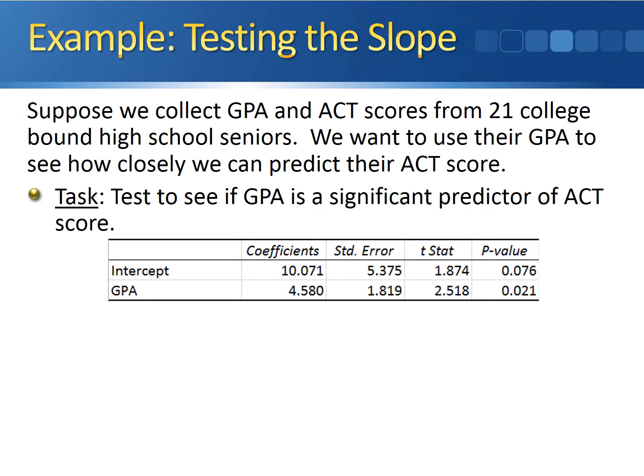What you should notice first is that there are two rows of statistics. The first row represents the intercept, but we typically only use the coefficient column for the intercept because we don't actually perform inference on the intercept. The last row represents the predictor variable, GPA in this case.